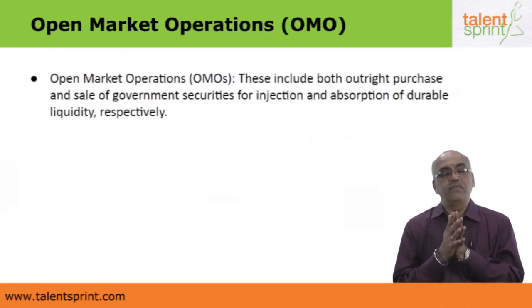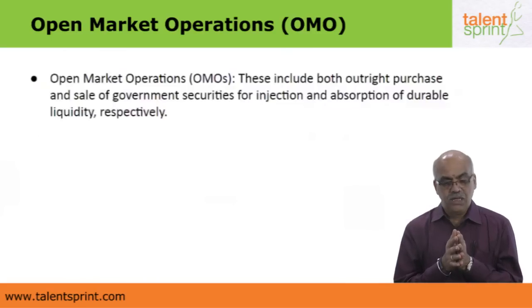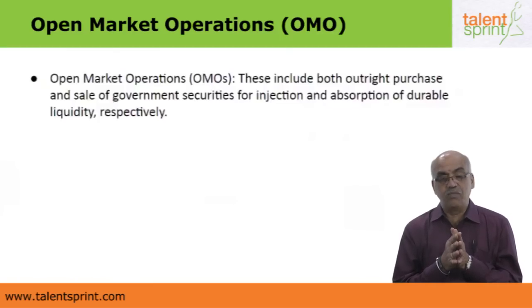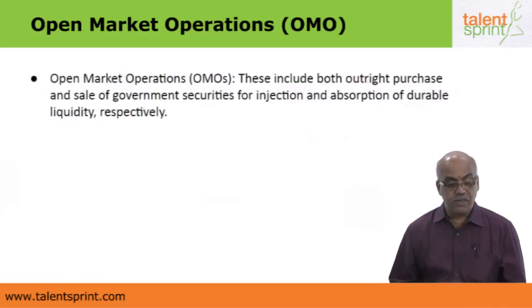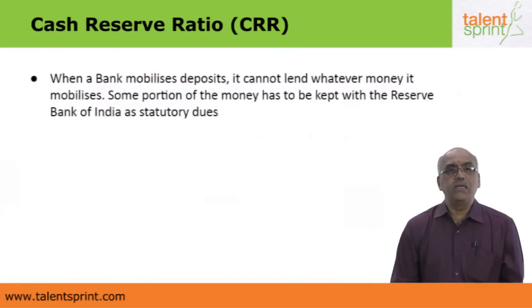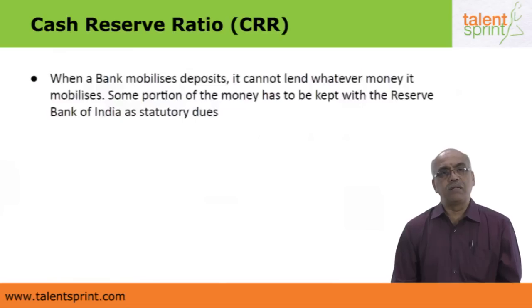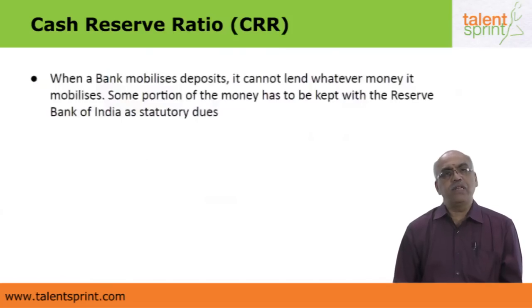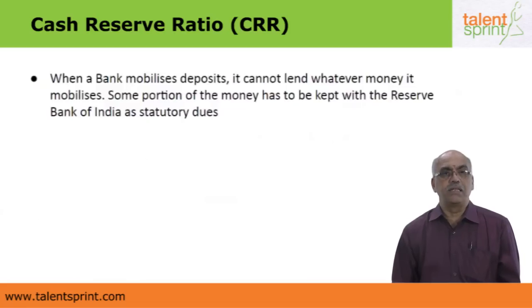Another quantitative method for controlling money supply is the Open Market Operations, or OMO. Open market operations include both outright purchase and sale of government securities for injection and absorption of durable liquidity respectively — contracting or expanding money supply to stabilize prices in the country.